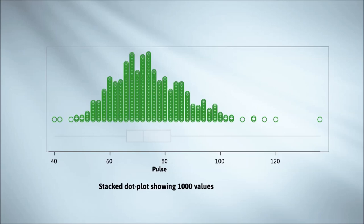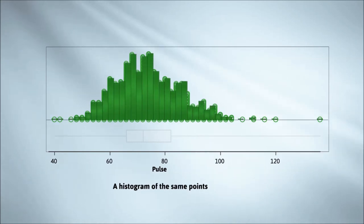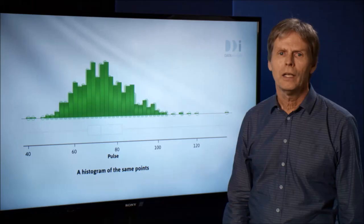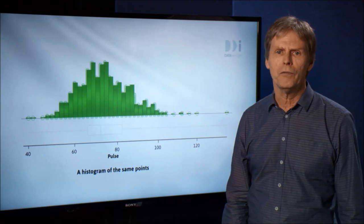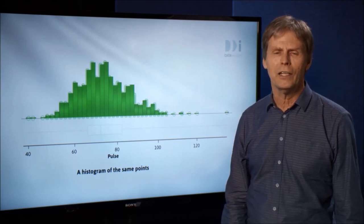Insight defaults from drawing dot plots to drawing histograms like this one at about 2000 observations. Histograms are faster to draw for large data sets, but you'll see they're giving us the same shapes to interpret. But the program lets us override the default and ask for the easier to understand dot plots.